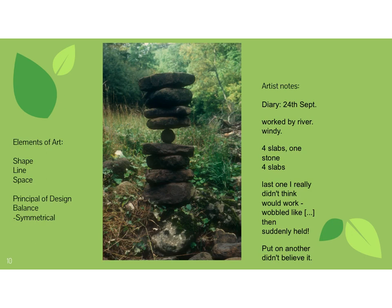Here the elements of art are shape, line, and space — the lines of the rocks. But the biggest one is balance: the balance of this part down here and this part up here, with that amazing little space right there with the round rock. In his notes he says he didn't think it would actually work — it kept wobbling — but he finally found a place where it balanced perfectly, and then he caught that picture.